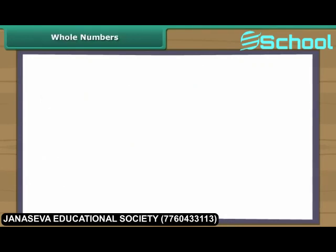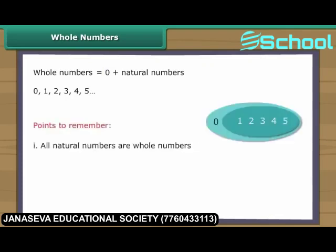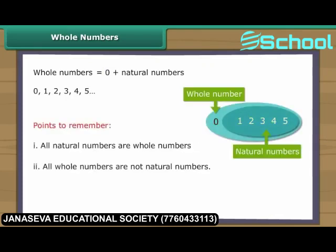Whole numbers include zero and all the natural numbers. Points to remember: One, all natural numbers are whole numbers. Two, all whole numbers are not natural numbers. Three, there is no largest whole number.